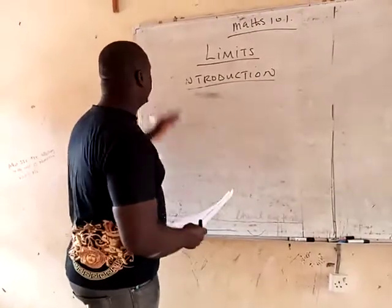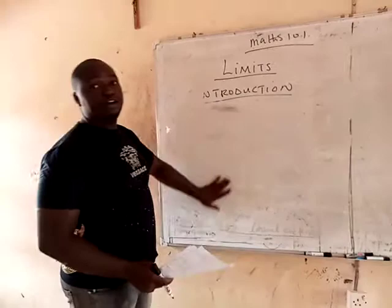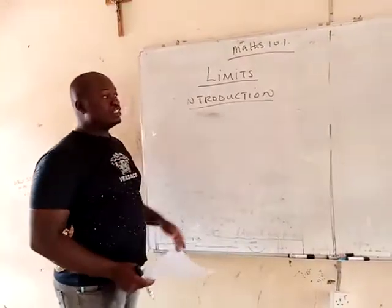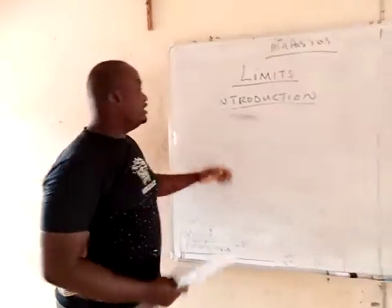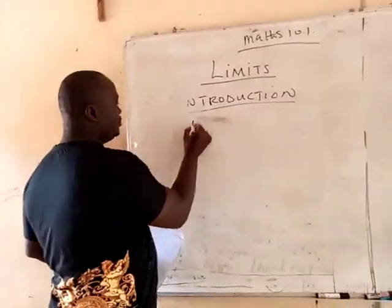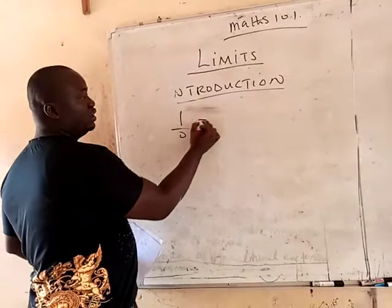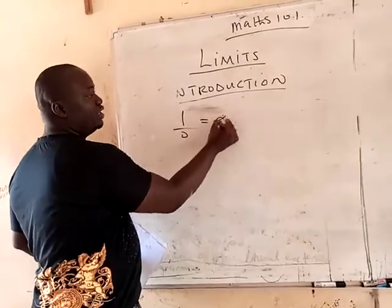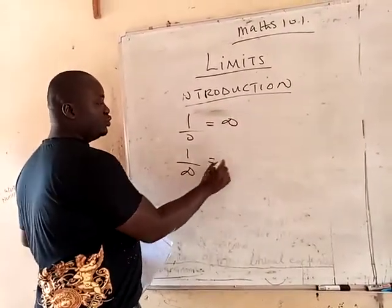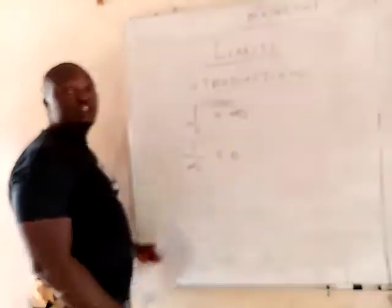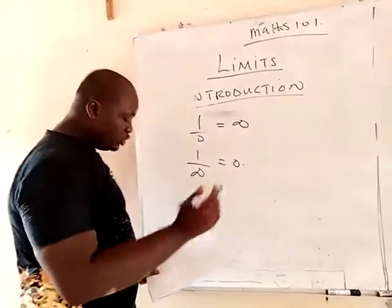Welcome class. The limit I'm going to be discussing in this workshop is infinity. If I give you 1 over 0, it's equal to infinity. And if I give you 1 over infinity, it's equal to zero. Note these two rules — they are very important. Let's continue.